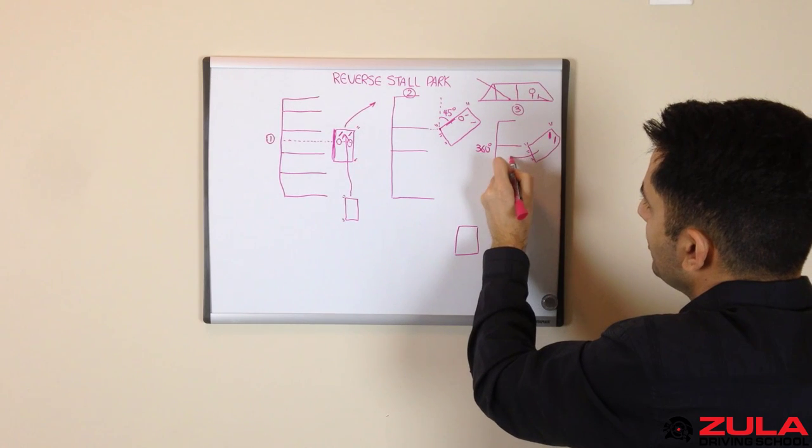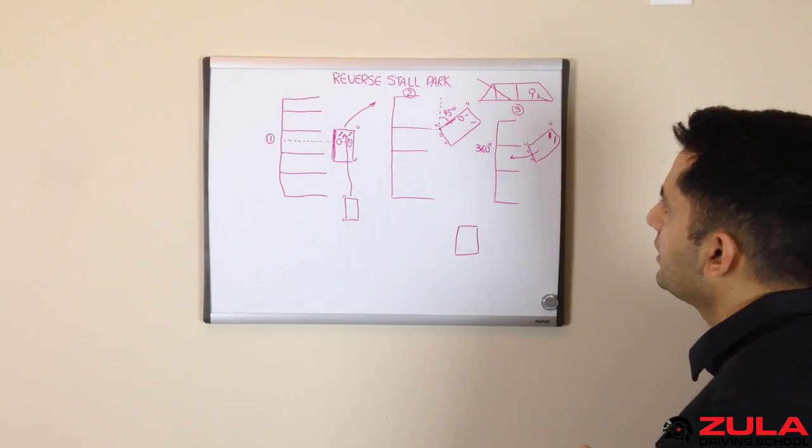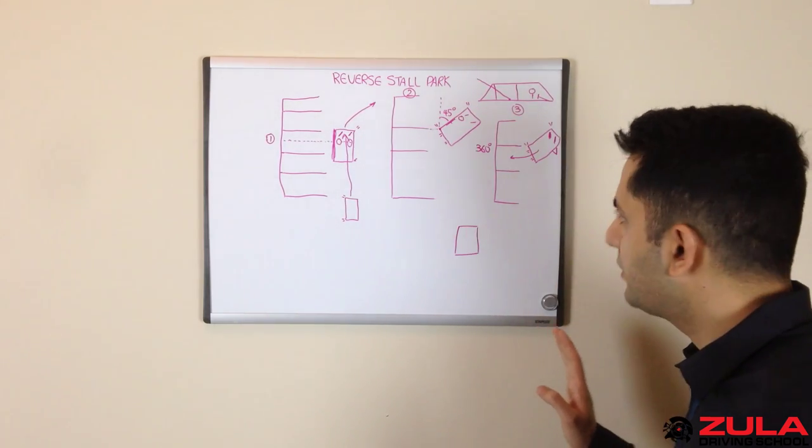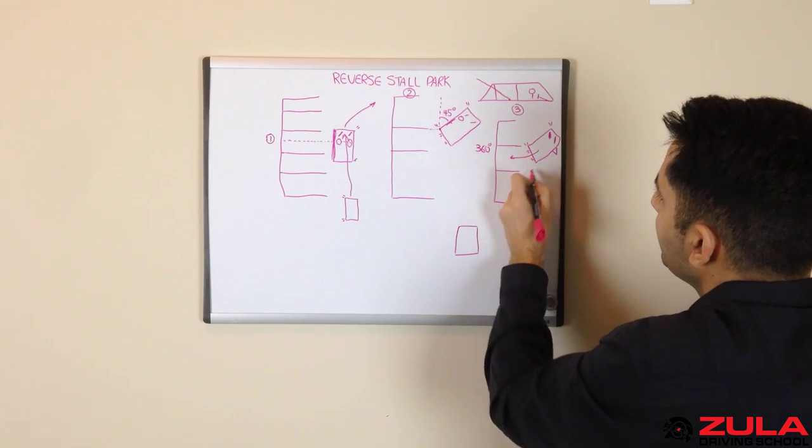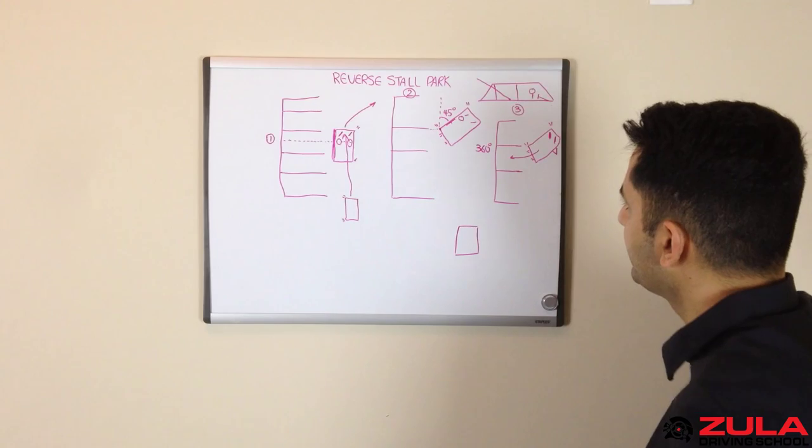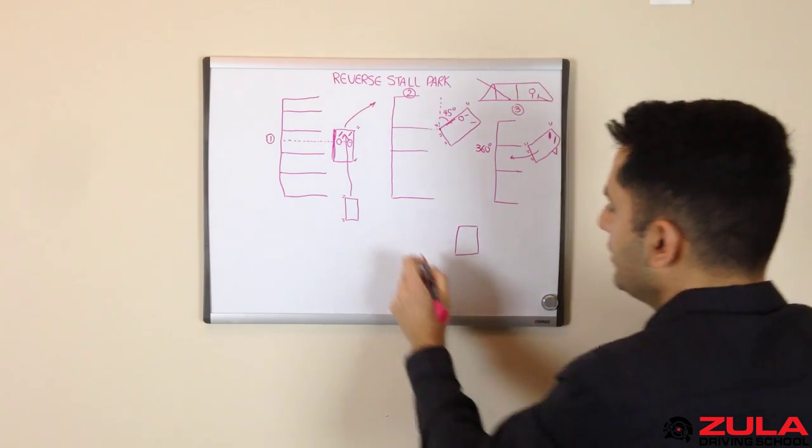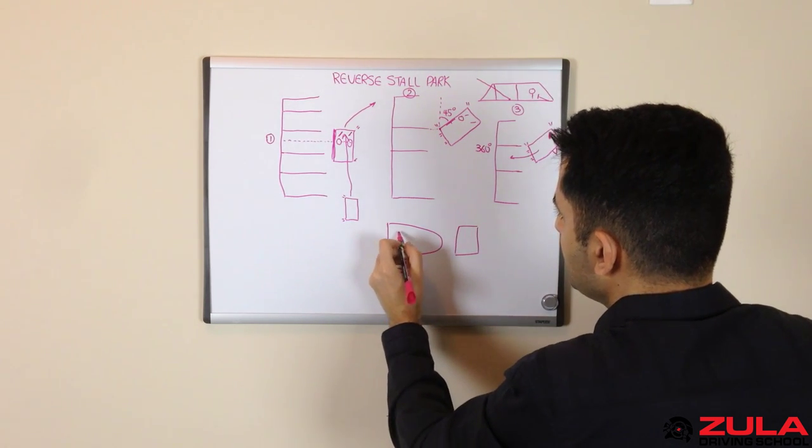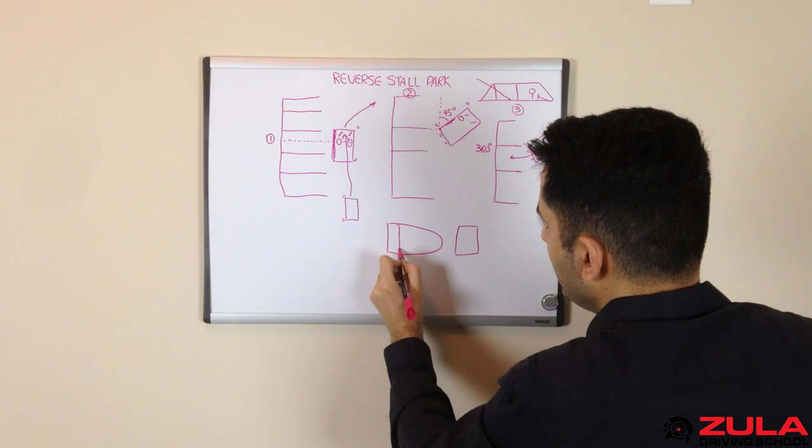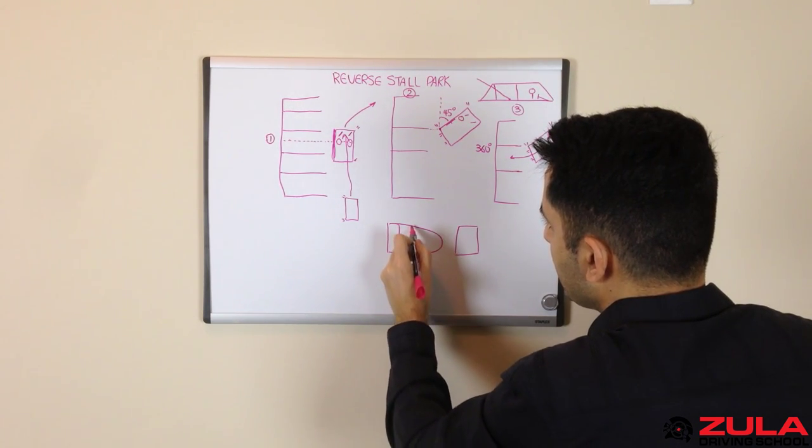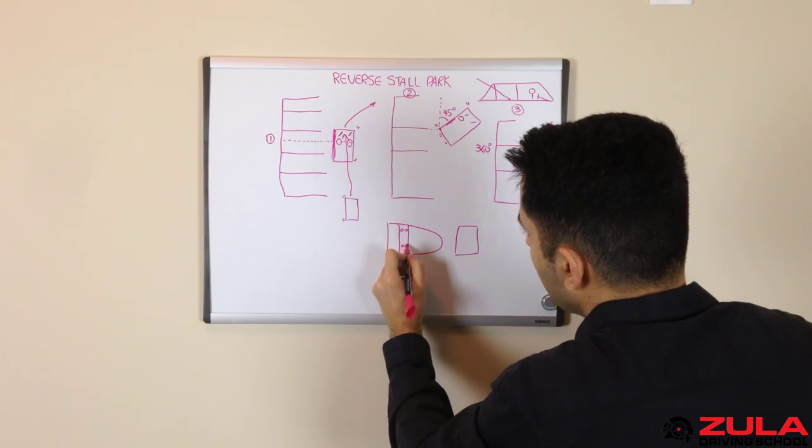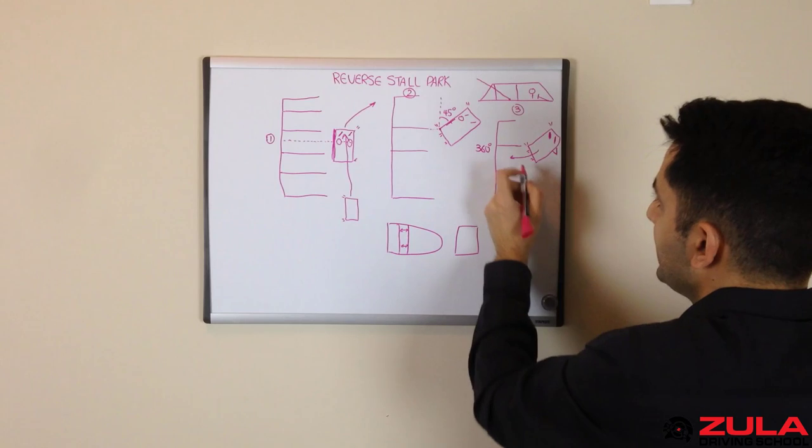At this point you want to look at your right side mirror as well. What you're looking for is you're waiting for this line to reappear in this mirror. You're going to see the body of your car and then you're going to start seeing this line. When you see this line and it's parallel with the body of your car, then you straighten out your wheel.